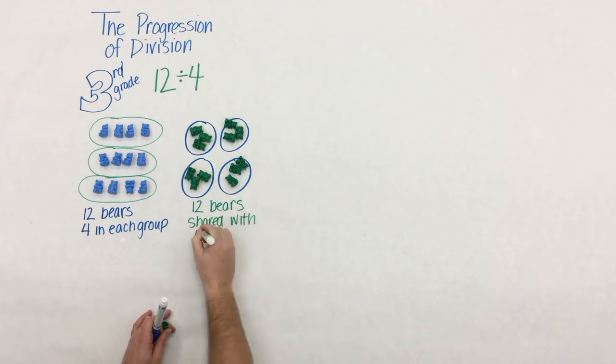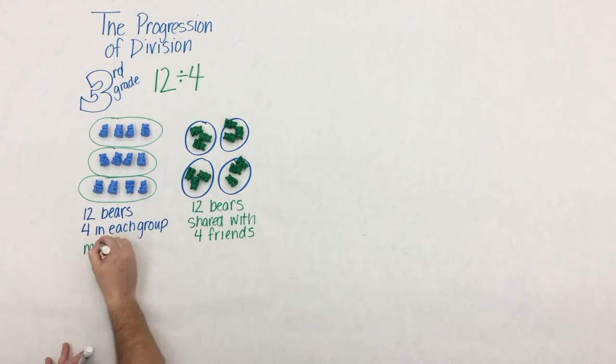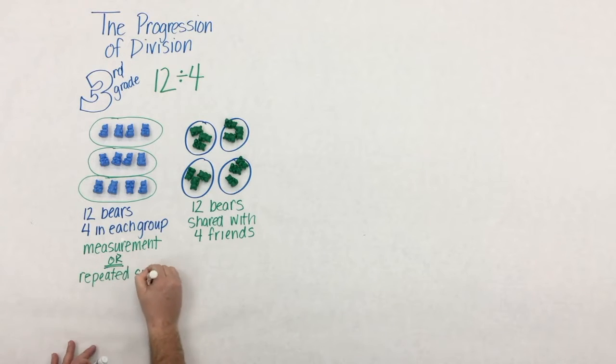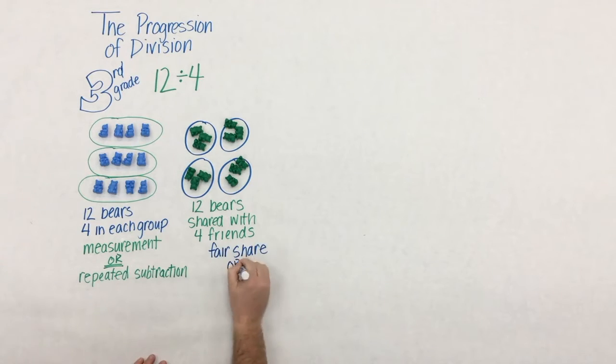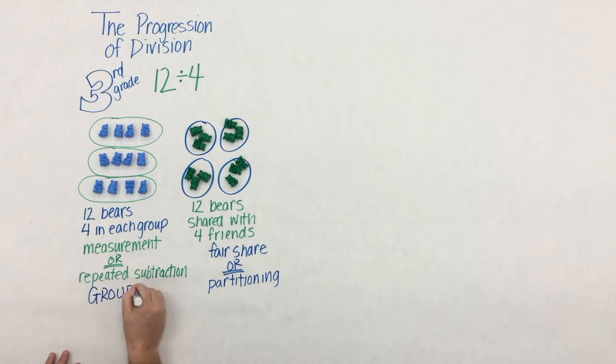In one, we have 12 bears with 4 in each group, which gives us 3 groups, and 12 bears shared with 4 friends, which leaves us 3 with each group. One model is measurement, or repeated subtraction. The other is fair share, which I think we're all pretty familiar with.